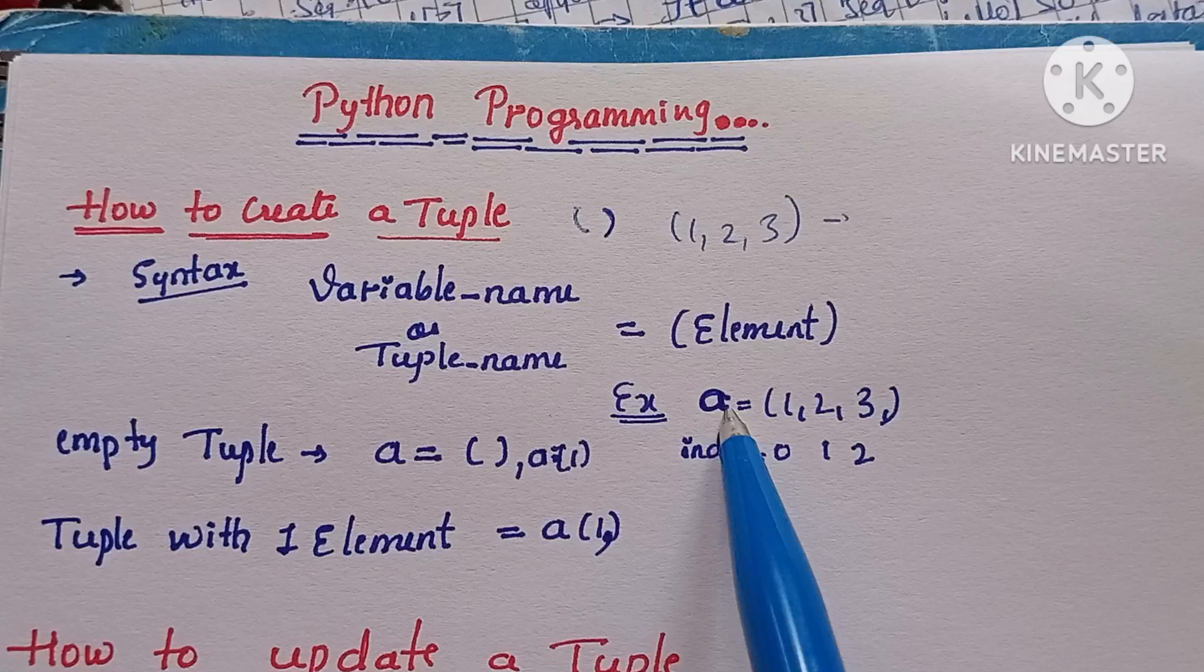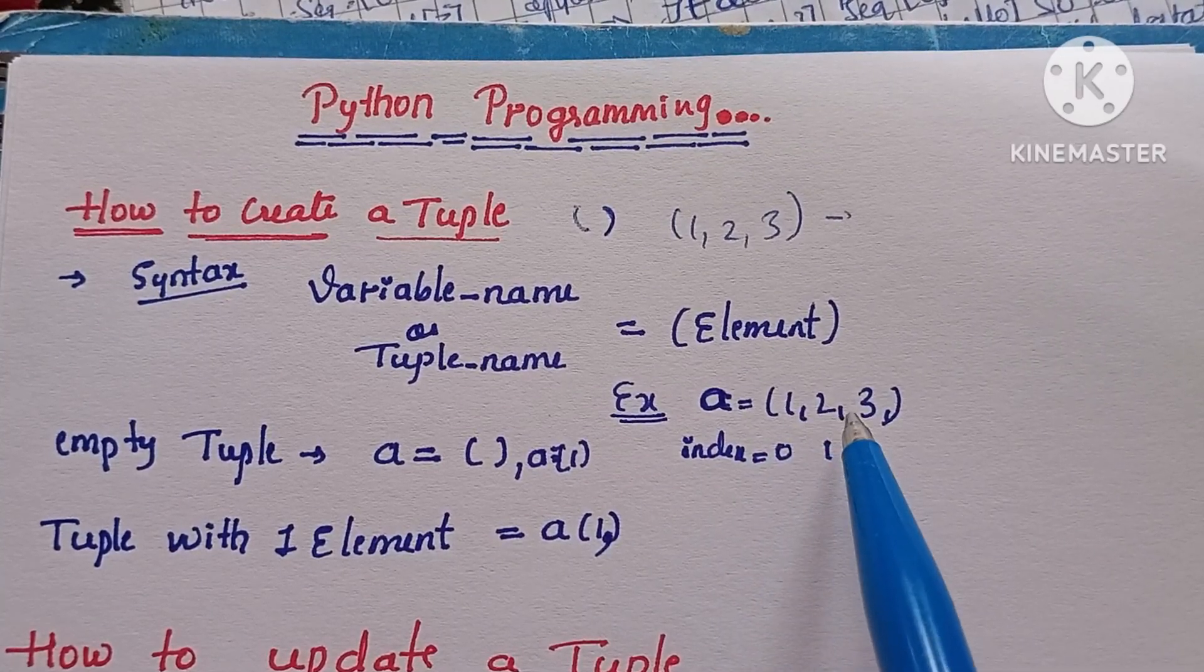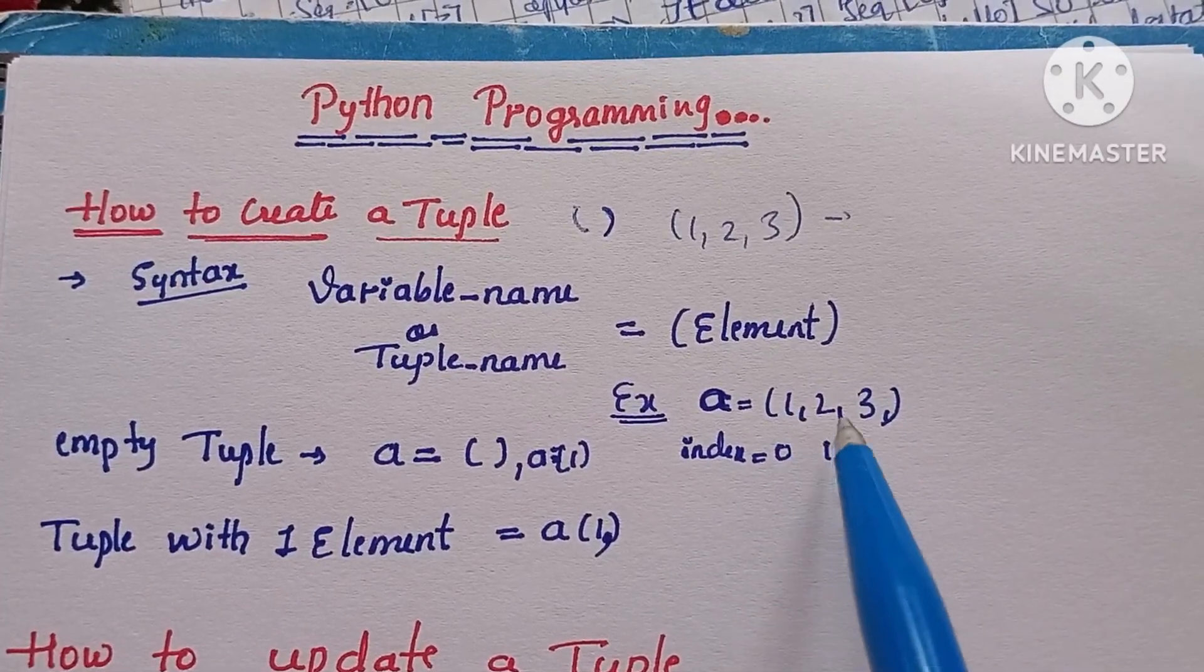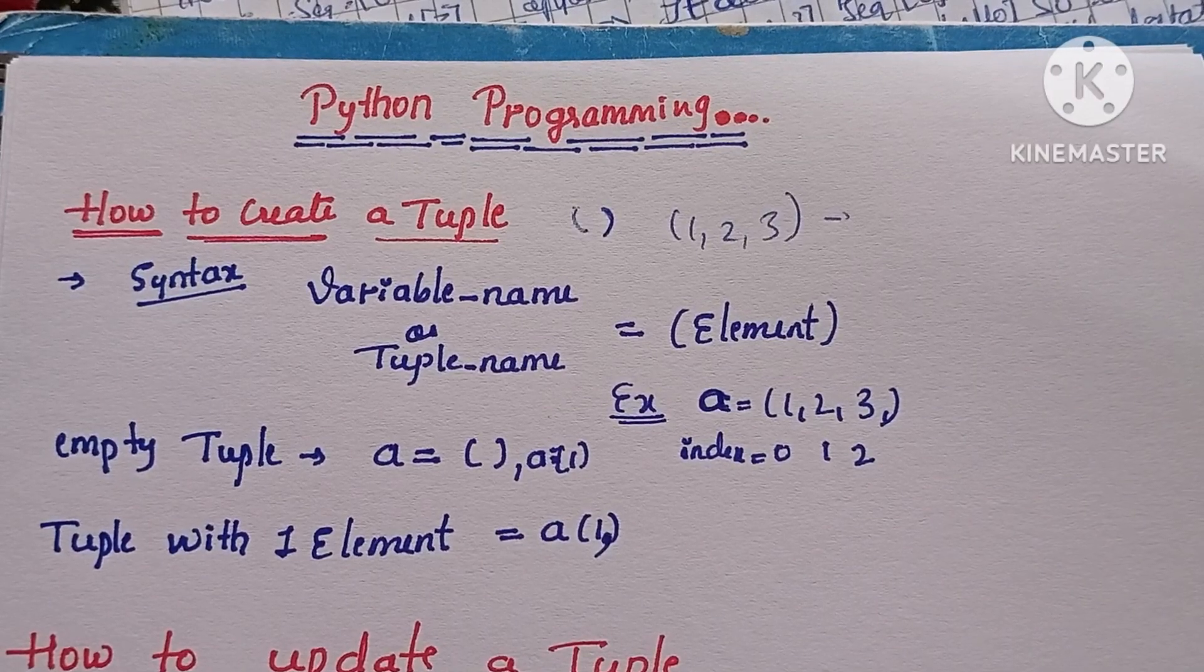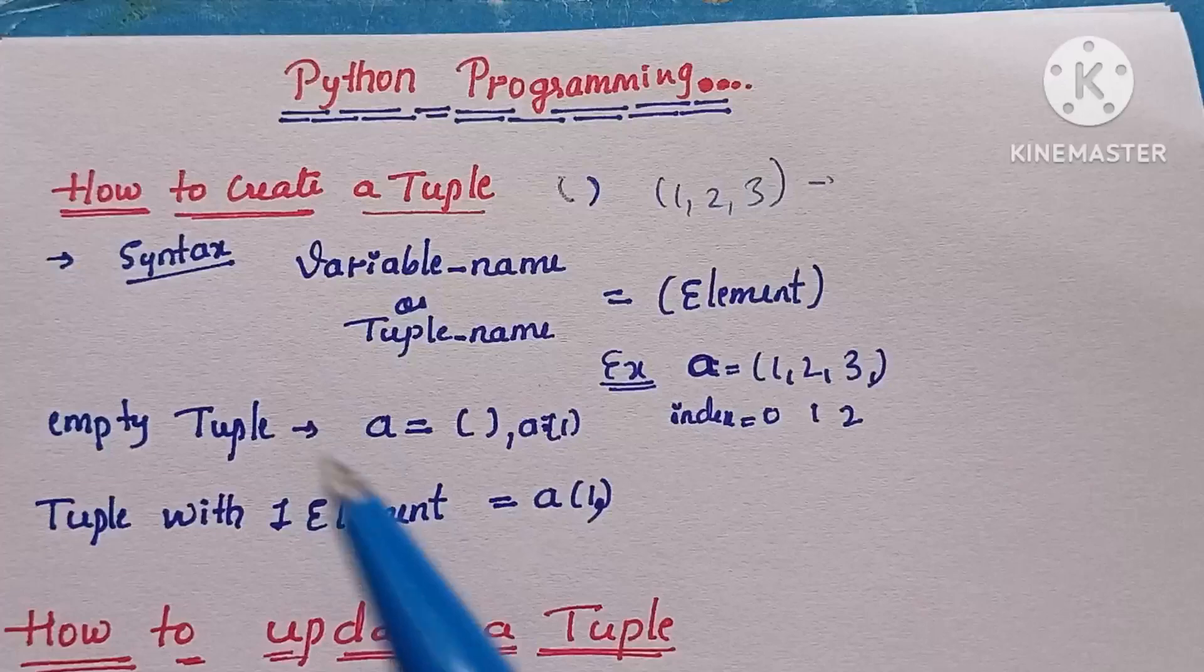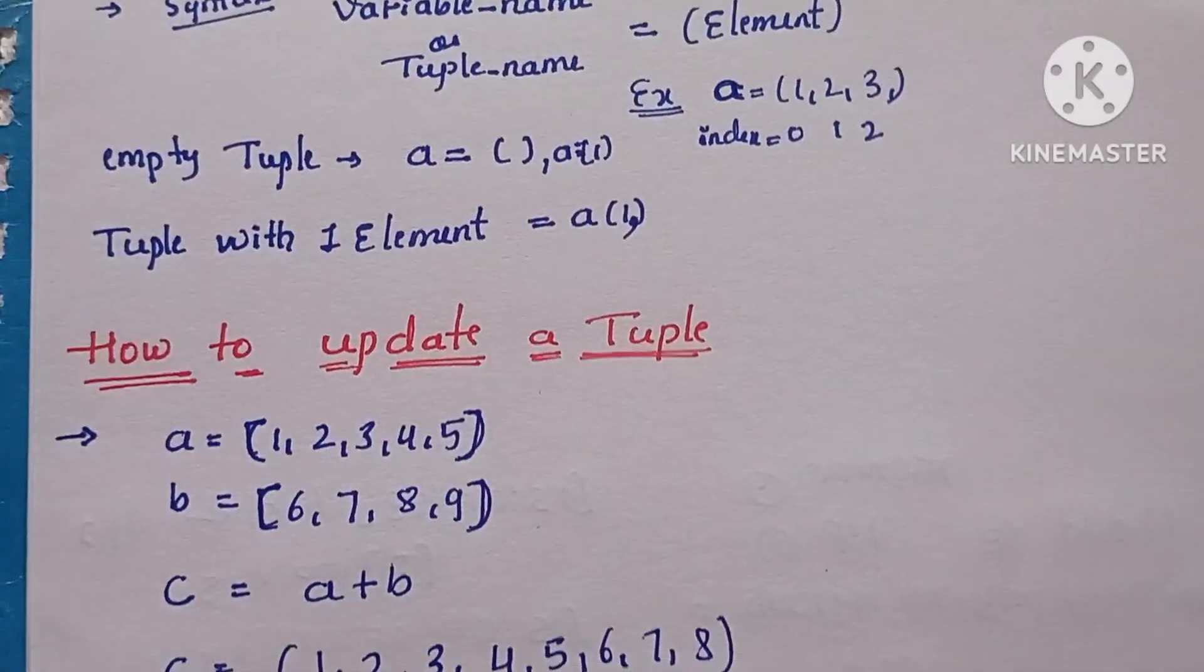'a' as a tuple. Here (1, 2, 3) - this is the creation of the tuple. So next one is how to update the tuple.